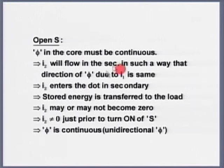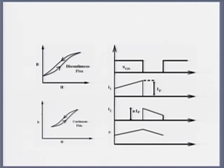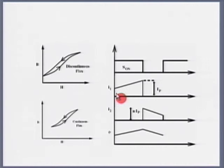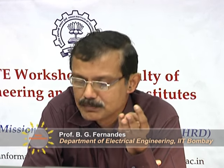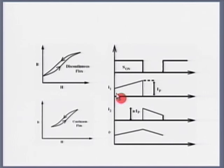The flux in the core must be continuous. Current must flow in the secondary such that the direction of flux due to the secondary current is the same as that of the primary. There was a question: how does the current waveform look in the primary? There are two possible modes: continuous conduction and discontinuous conduction. Here, continuous conduction means the flux in the core has not become zero prior to closing the switch for the second time. In buck-boost or Ćuk converters, continuous conduction refers to inductor current; here it implies finite flux in the core prior to closing the switch.